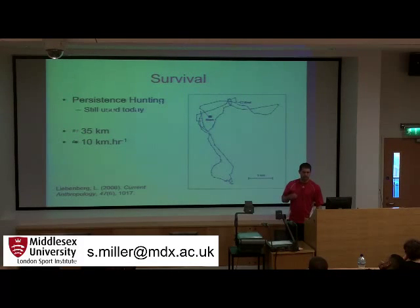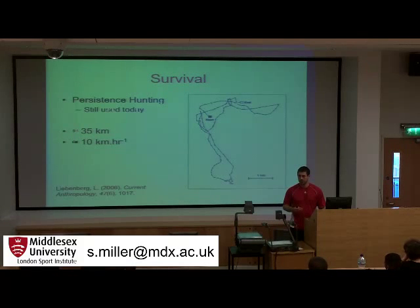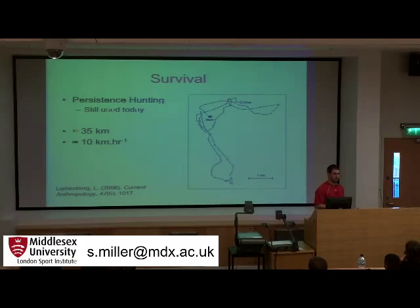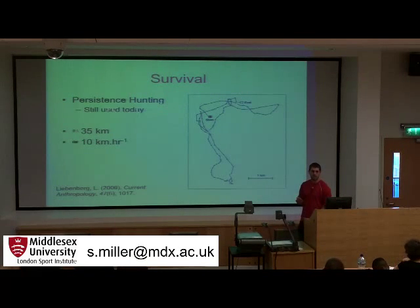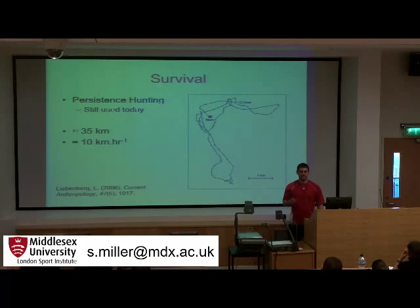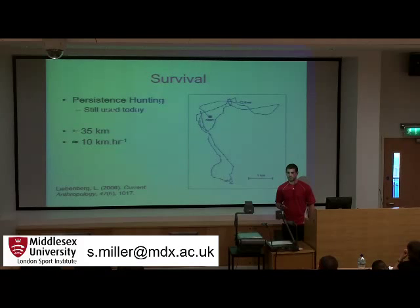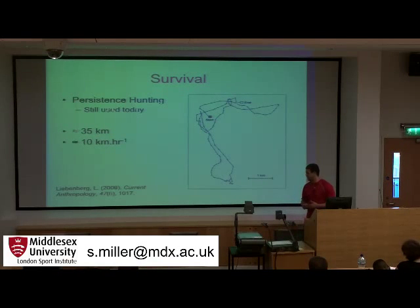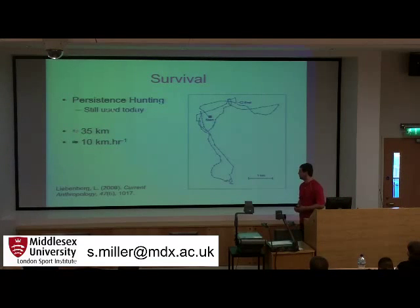The advantage we had over animals is that we didn't have to stop, because we're able to control our body heat. We've adapted to control body heat — we can sweat, perspire, and breathe out hot air. Animals are unable to sweat as well as we are, so they have to stop and cool down. During that period, the humans were able to catch up and eventually make the kill.